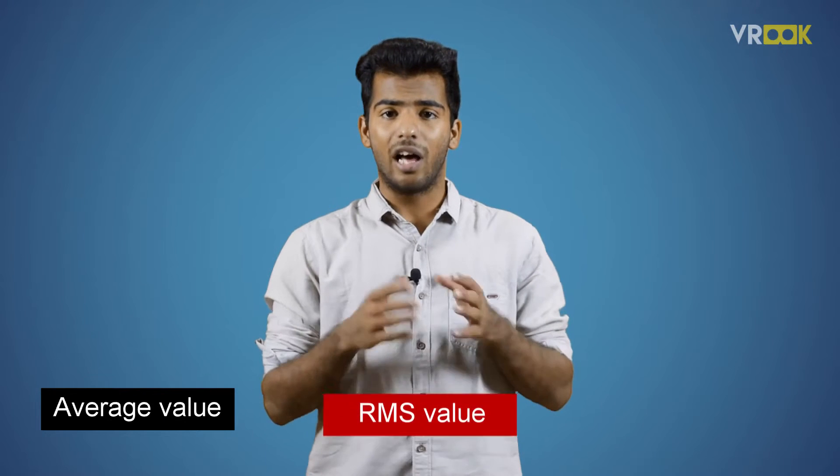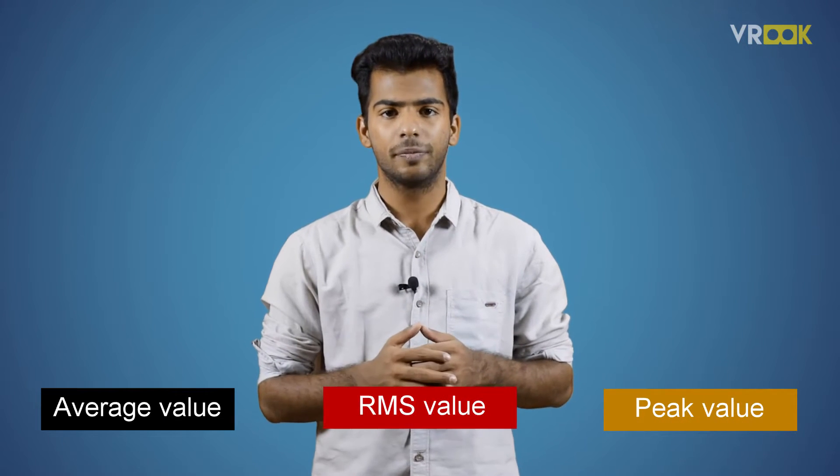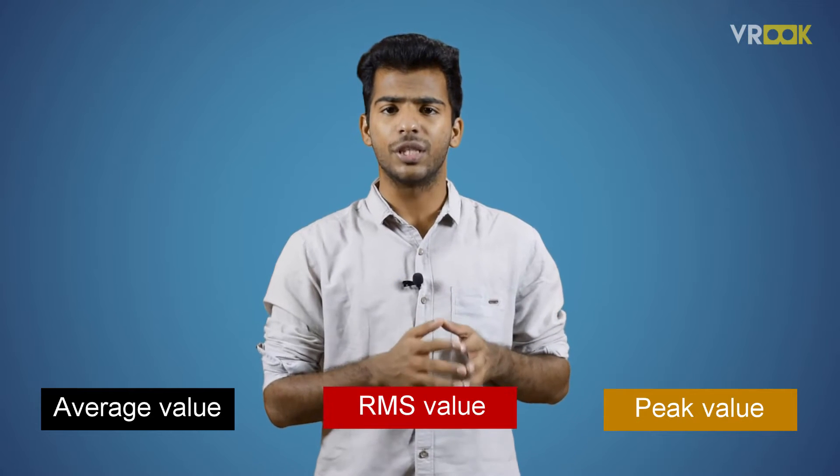The average value, RMS value, and peak value are related to each other. Based on this relationship, we have two factors of alternating quantity. They are form factor and peak factor.